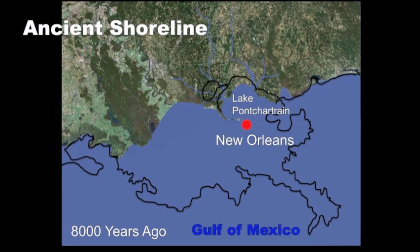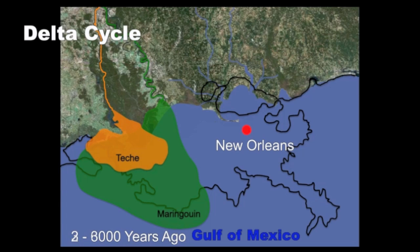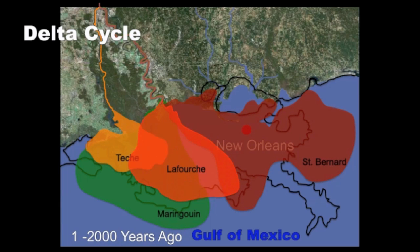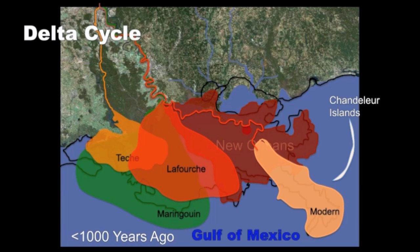Sea level rise then slowed and the river began building up sediments along the coast. Scientists call these deposits delta lobes. Additional delta lobes were formed as the river switched from east to west and back again. When the river switched to a new course, the abandoned lobe began to deteriorate, a process that caused formation of barrier islands.